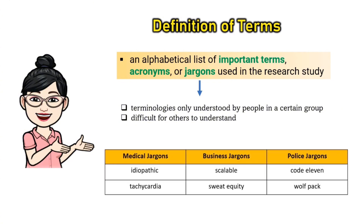Medical jargons: Idiopathic, Tachycardia. Business jargons: Scalable, Sweat equity. Police jargons: Code 11, Wolfpack.